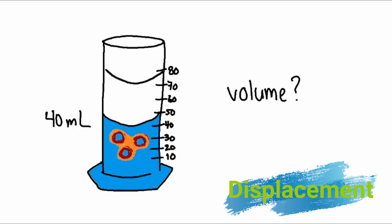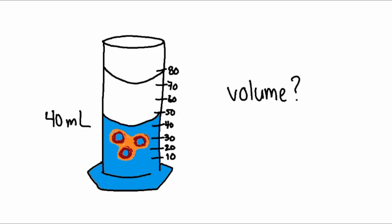So our new measurement of water, our meniscus, is at 70 milliliters. If we know the water changed to 70 milliliters, what is the volume of our fidget spinner or irregular object? That's right, it's 70 minus 40 milliliters, and we get our answer of 30 milliliters.